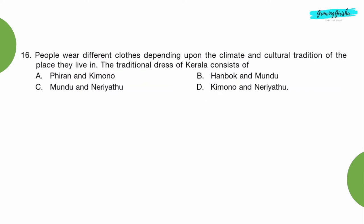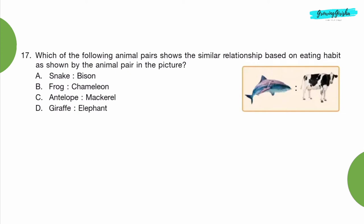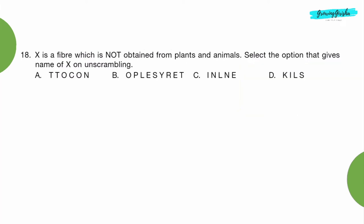Question 16: People wear different clothes depending upon the climate and cultural traditions of the place they live in. The traditional dress of Kerala consists of Option C: Mundo and Niriathu. Question 17: Which of the following animal pairs shows the similar relationship based on eating habits as shown by the animal pair in the picture? Option A: Snake, Bison.